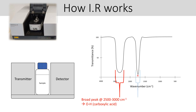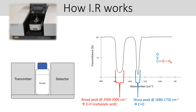We've also got another absorption — a sharper peak — between 1,680 and 1,750, which corresponds to a carbonyl, a C=O. These are bonds within our sample that are absorbing infrared radiation of that particular frequency, and as a result the transmittance — the amount of infrared radiation within that range that reaches the detector — is much lower. From this information we can infer that we have an OH belonging to a carboxylic acid, plus a carbonyl. Put them together, we've got a carboxylic acid.